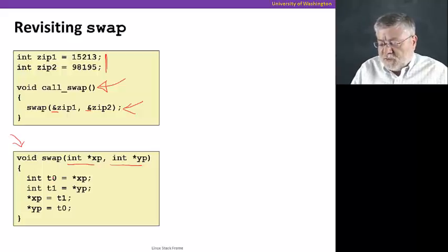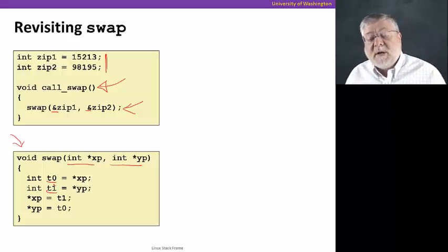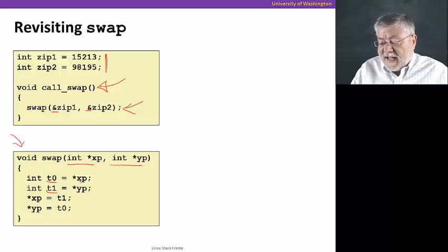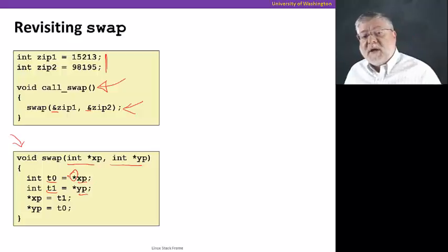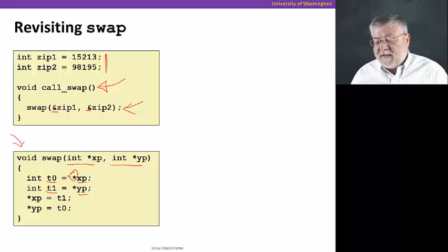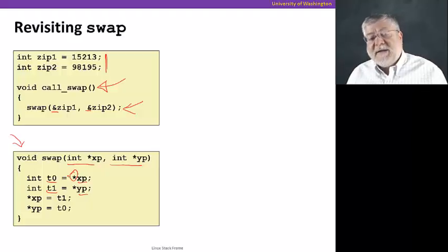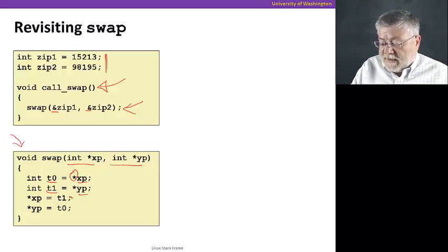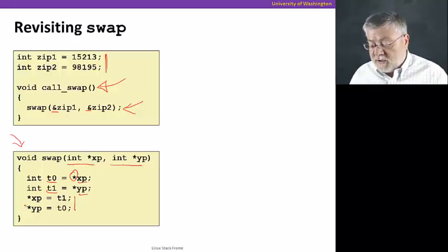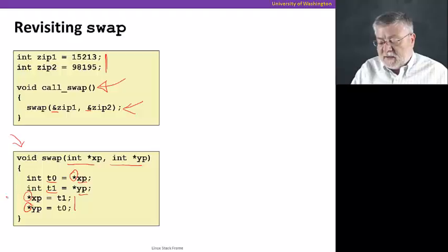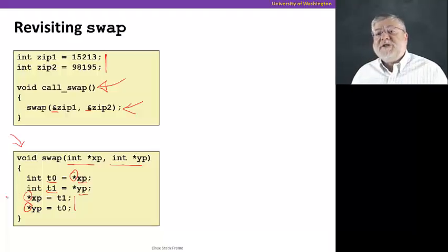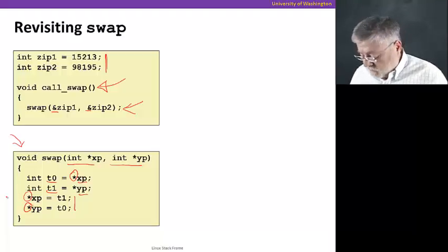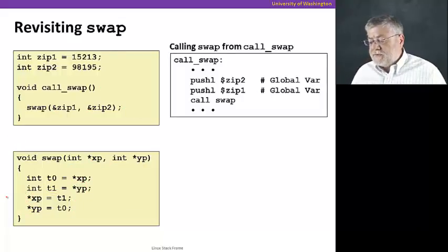What we do then is have two temporary variables, T0 and T1. We load them up with the values stored at those pointers. Remember, we're dereferencing the pointer, going to get the value at that address. That's going to be the value 15213 and 98195. Then we take those temporary values and put them in the opposite location, dereferencing the pointers. That's our function call_swap and swap, our two procedures.